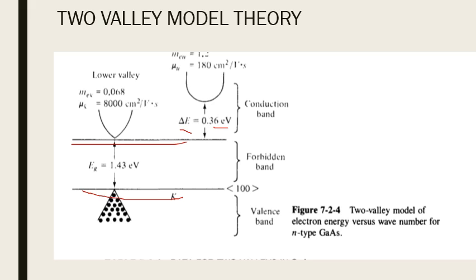Electrons in the lower valley occupy a low density of states and have a very small effective mass, so their mobility is going to be very high. As you can see in the diagram, the doping concentration and mobility are both high in the lower valley.